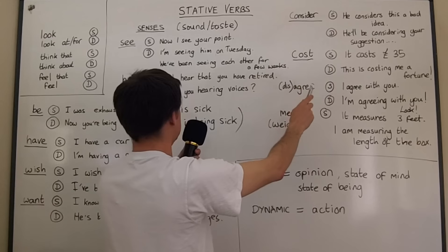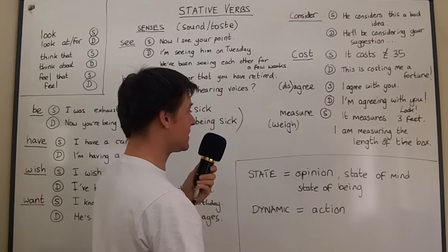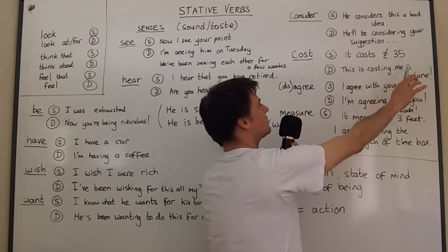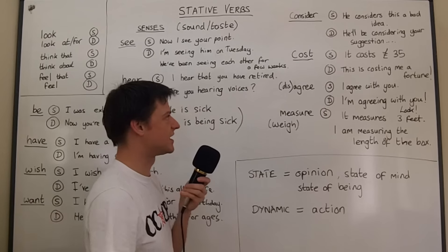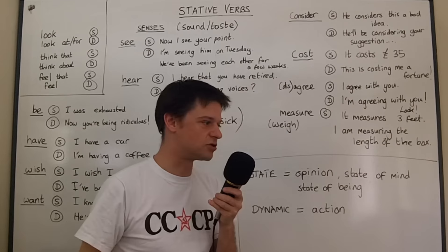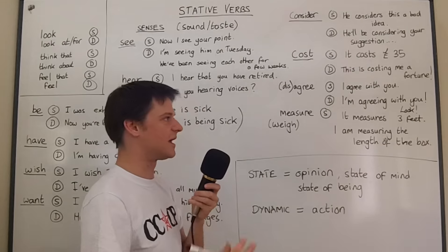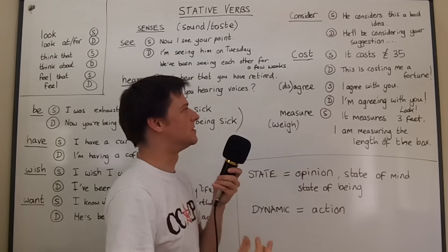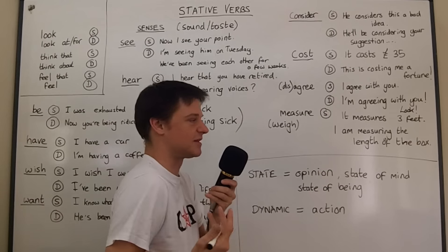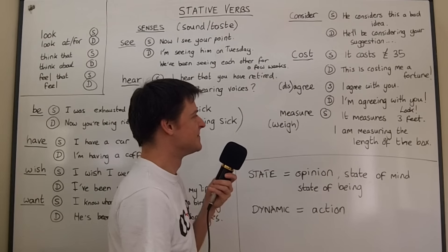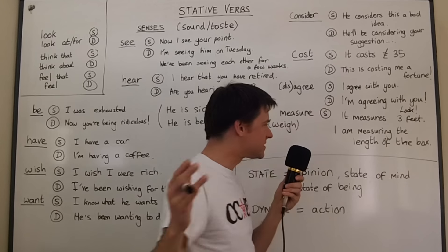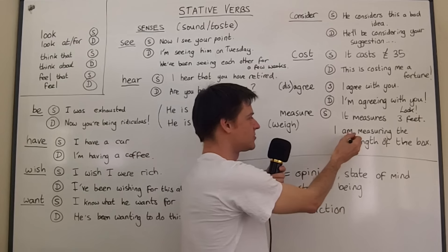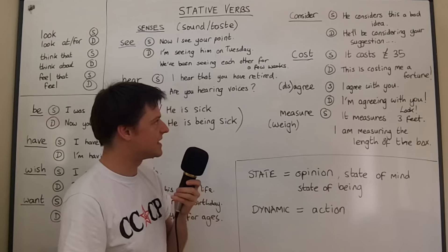Look at 'consider,' 'cost,' and 'measure.' When it comes to cost and measure especially, 'it measures three feet' or 'it costs £35' — these are states. But 'this holiday is costing me a fortune' — maybe you've been spending money all day, so it is actively costing you. And 'I am measuring the box' — there we're talking about an action, not just the state of how something is.